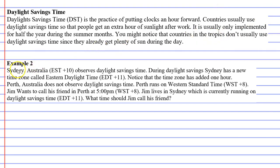Now, if we look at example two, Sydney, Australia, which we mentioned earlier, is on Eastern Standard Time, which is 10 hours ahead of UTC. Sydney observes daylight savings time, and during daylight savings, Sydney has basically renamed their time zone. Rather than calling it Eastern Standard Time, they call it Eastern Daylight Time, or EDT, and this time it's a plus 11. Notice that the time zone has added one hour because during daylight savings time, you add an hour onto your time.